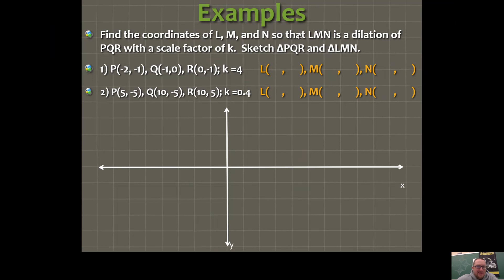This is part two of our lesson on 6-6. We're going to look at some examples. Find the coordinates of points L, M, and N so that triangle LMN is a dilation of triangle PQR with a scale factor of K. Sketch both of those triangles.